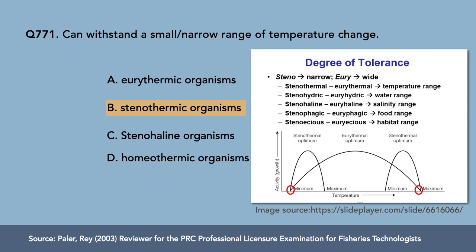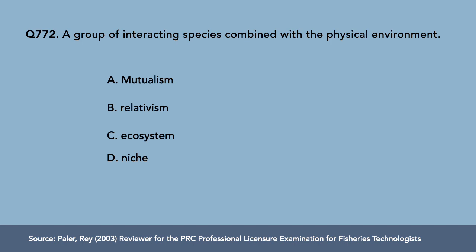Here are other related terminologies: stenohydric means narrow water range, euryhydric means wide water range; stenohaline means narrow salinity range, euryhaline means wide salinity range; stenophagic means narrow food range, euryphagic means wide food range; stenoecious means narrow habitat range, euryoecious means wide habitat range.